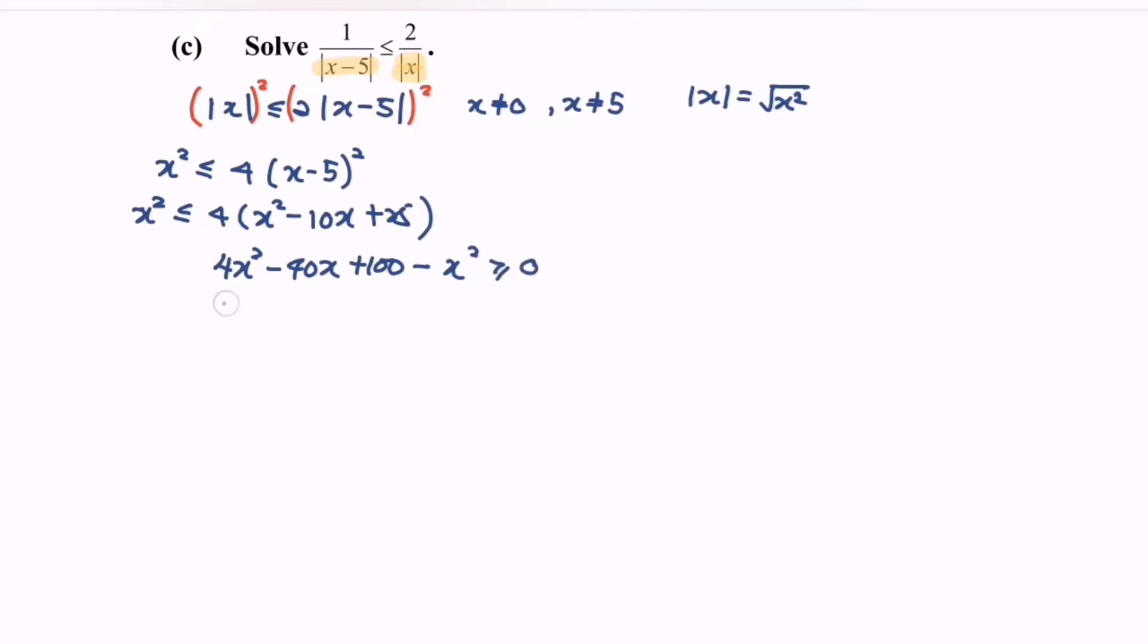So now we have a quadratic on the left-hand side, so it's time for us to factor the situation. If we factorize, we will have 3x minus 10 multiplied with x minus 10, greater than or equal to 0. Since this is the simplest form, we have to determine the sign which is positive because greater or equal to 0.